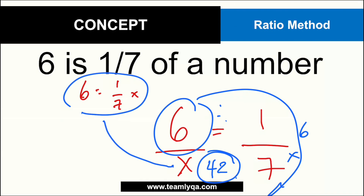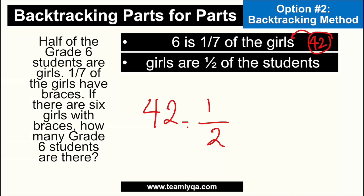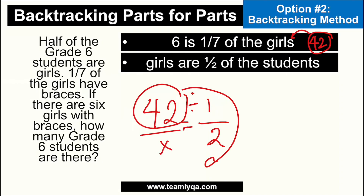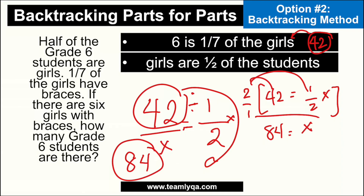Now that we know the answer to the first part is forty-two girls, I can solve for the next part. Forty-two girls are one-half of the students. Using ratio rotation again: forty-two divided by one is forty-two, times two is eighty-four. Or, using algebra: forty-two equals one-half x, multiply both sides by the reciprocal of one-half which is two over one, giving eighty-four equals x. Either way, the correct answer is eighty-four.